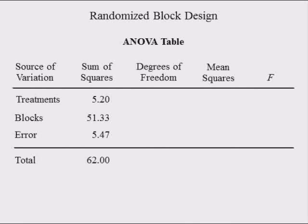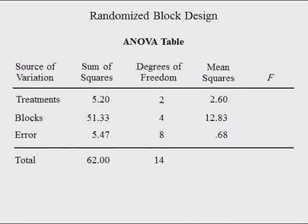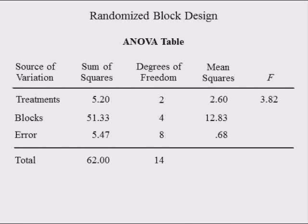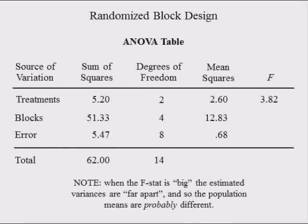Next, record the degrees of freedom: 2, 4, and 8. The mean square due to treatments equals SS treatments divided by its degrees of freedom, which is 2.6 MPG squared. The mean square due to blocks equals SS blocks divided by its degrees of freedom, which is 12.83 MPG squared. The mean square due to error equals SS error divided by its degrees of freedom, which is 0.68 MPG squared. Dividing MST by MSE gives the F-stat of 3.82. When the F-stat is large, the MST is larger than MSE, meaning MSTR is not a good estimate of population variance sigma squared.